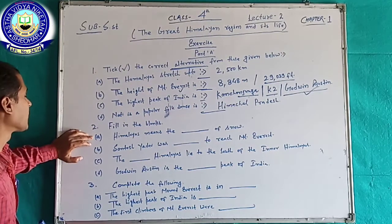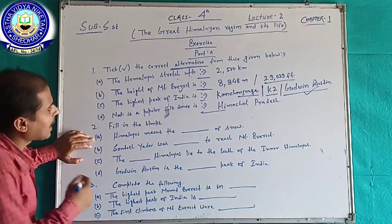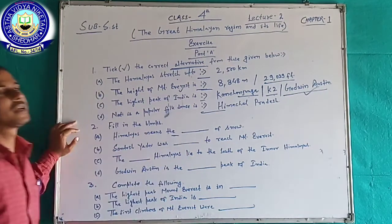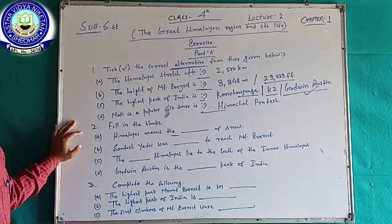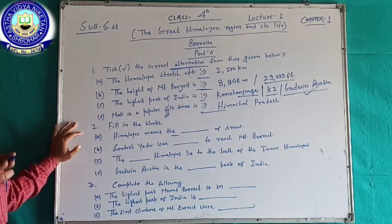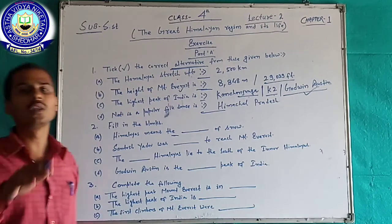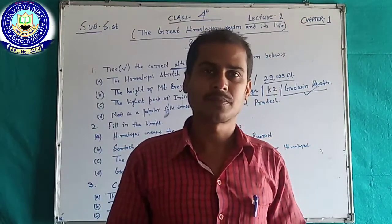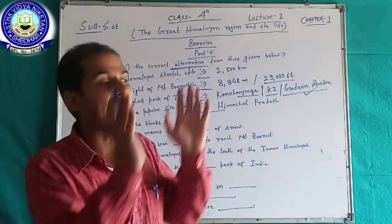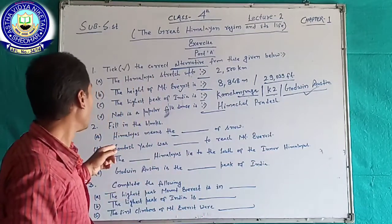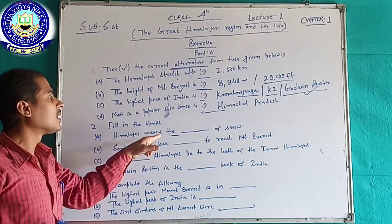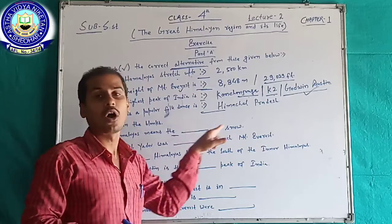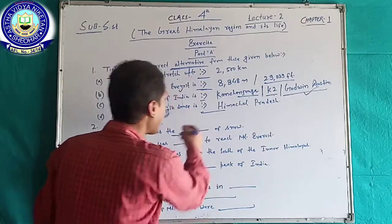Now your question number two, fill in the blanks: Himalayas means — all living creatures have their own shelter, so the Himalaya is the shelter of snow, or the Abode of Snow. Here we write Abode.